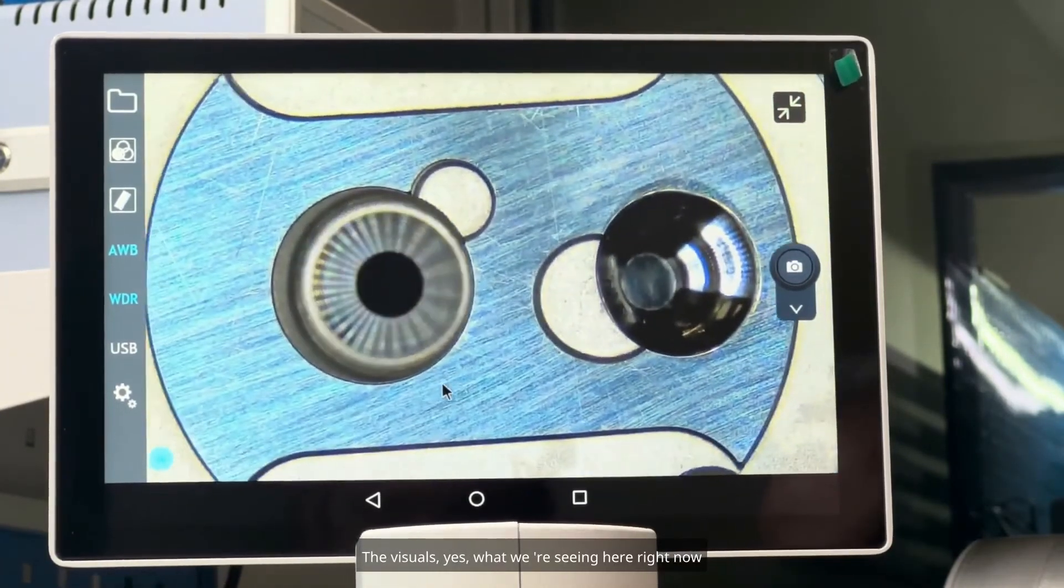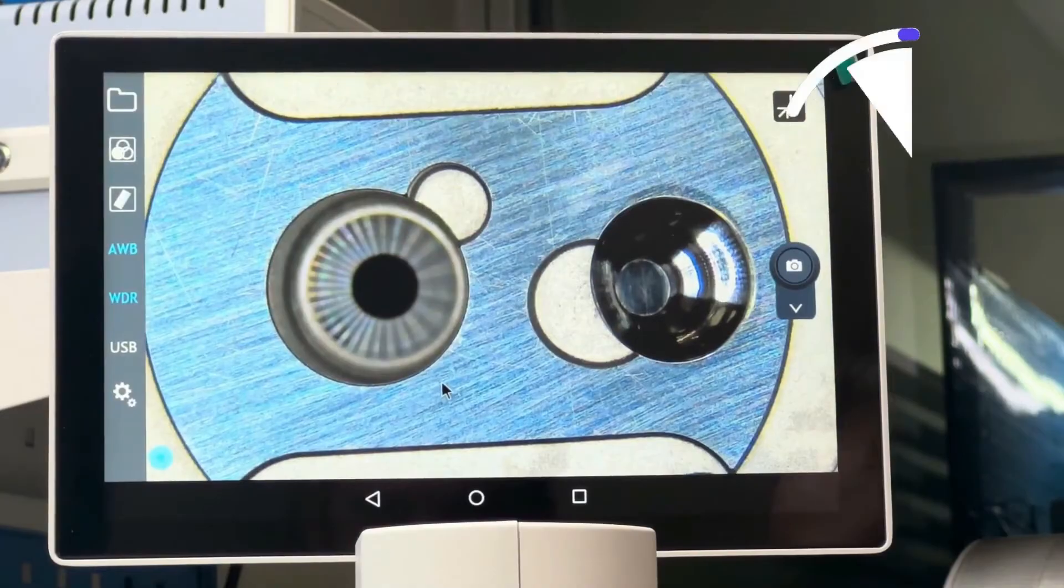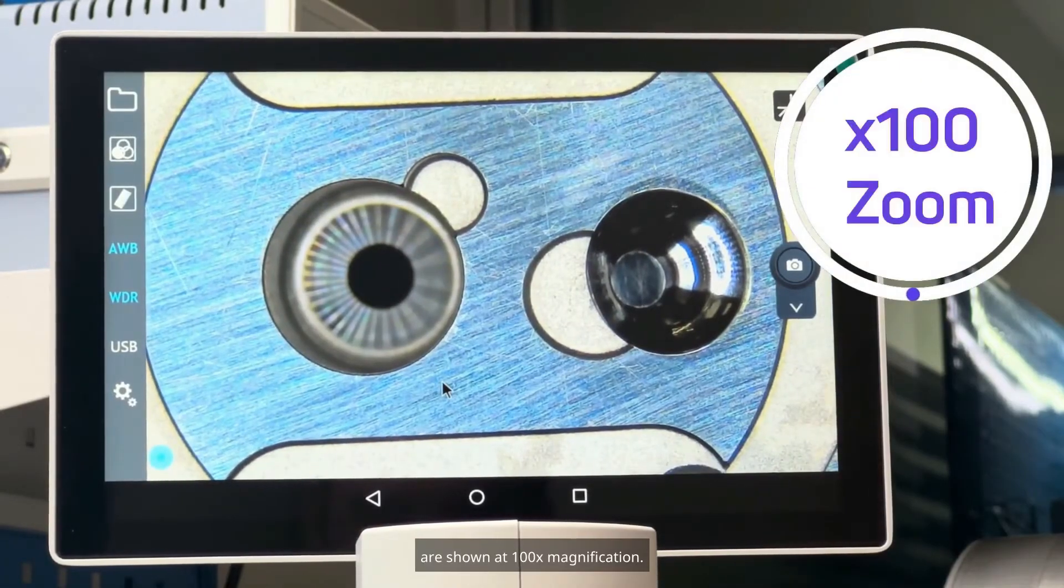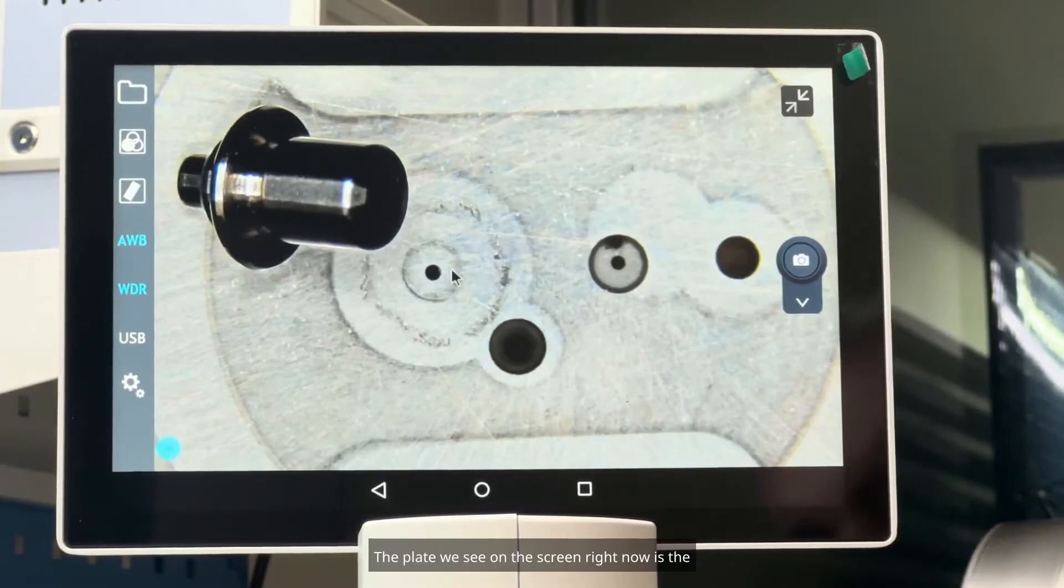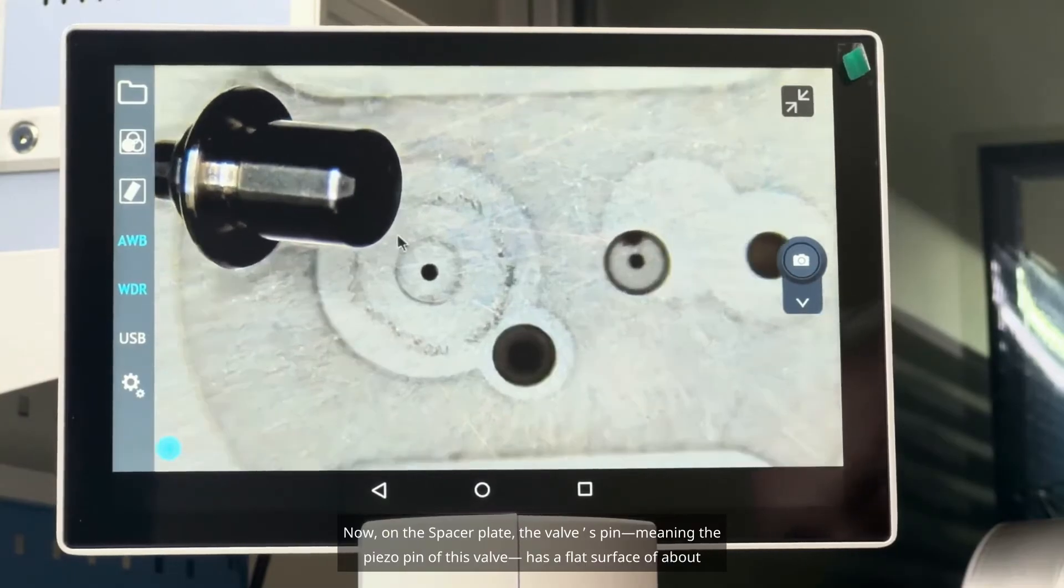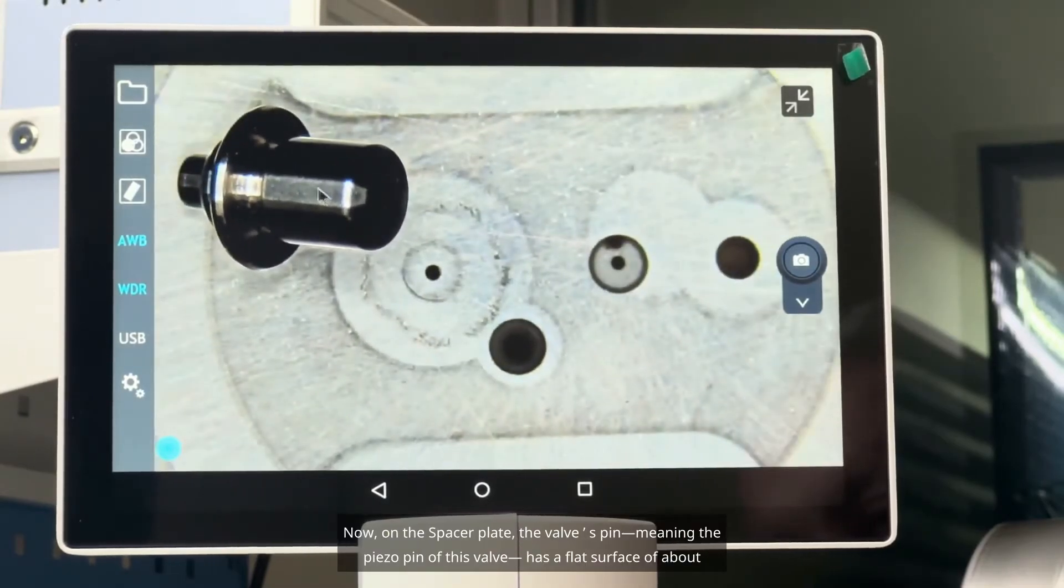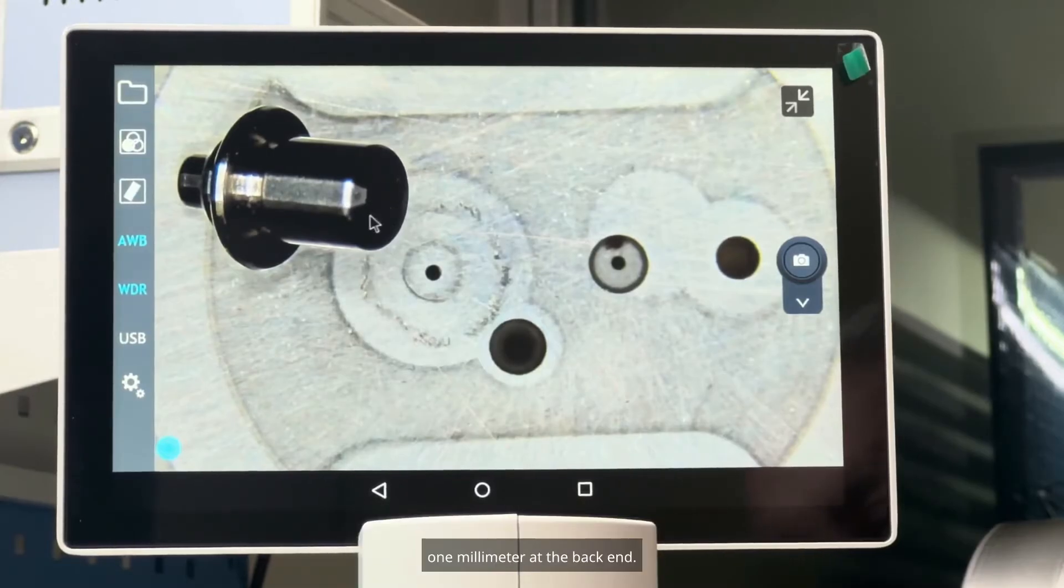The visuals, what we're seeing here right now, are shown at 100x magnification. The plate we see on the screen right now is the spacer plate that the piezo valve rests on. Now, on the spacer plate, the valve's pin, meaning the piezo pin of this valve, has a flat surface of about 1 mm at the back end.